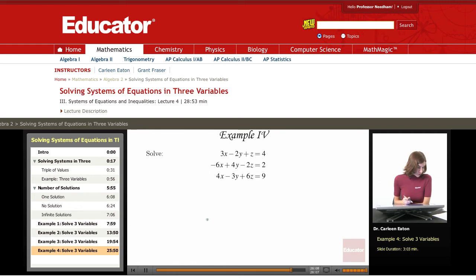So I'm going to work with the first and second equations, and what I want to do is eliminate the z. So in order to do that, I'm going to need to multiply this first equation by two.